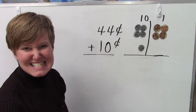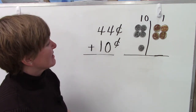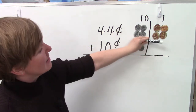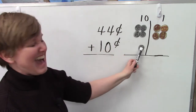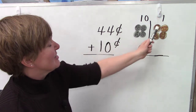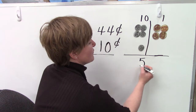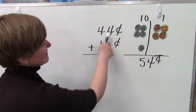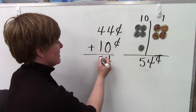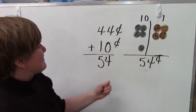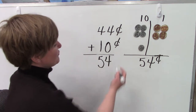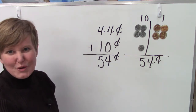Here we have forty-four plus ten. Let's look at our coins. In our tens place we have our dimes — ten, twenty, thirty, forty. Forty-one, forty-two, forty-three, forty-four. And down here, we're going to add ten cents to it. Let's count, starting with our dimes — ten, twenty, thirty, forty, fifty. Fifty-one, fifty-two, fifty-three, fifty-four. We have fifty-four cents. Let's try it here in our addition problem. Four plus zero is four. Four plus one is five. I made sure that I had my places lined up — the four and the zero are both in the ones place, and the four and the one are both in the tens place. Fifty-four cents. When we add ten cents to forty-four cents, we end up with fifty-four cents. Good job.